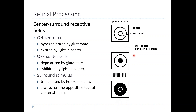An off-center cell would have the opposite effect. Complete illumination or complete darkness would give you the same intermediate response. Its preferred stimulus would be a ring of light surrounding the center — basically a donut — with darkness in the center itself. This is the activity pattern of an off-center cell, as opposed to the on-center cell.